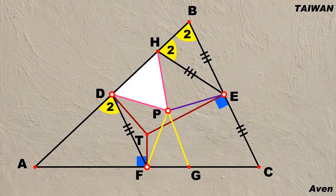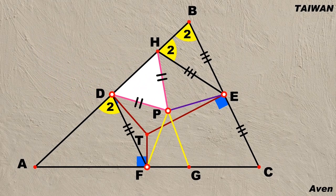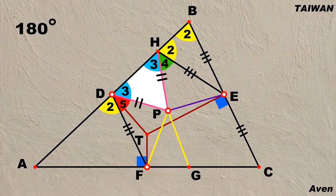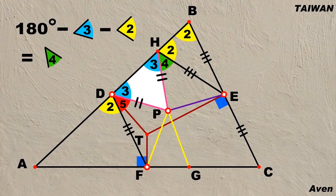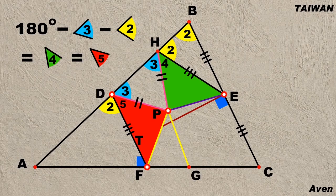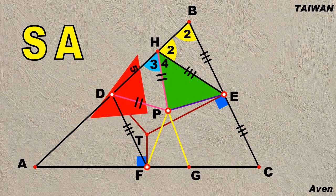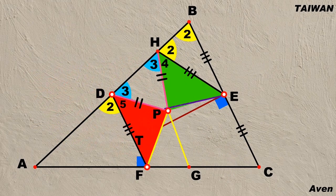Now let's watch the white triangle. Since the length of the two pink sides of the triangle are equal, the blue angle 3 is therefore equal to another blue angle 3. Now let's watch angle 4 and angle 5. Since 180 degrees minus angle 3 and minus angle 2 equals both angle 4 or angle 5, the red triangle is therefore congruent to the green triangle because of the relation side-angle-side. Thus, PE is equal to PF.